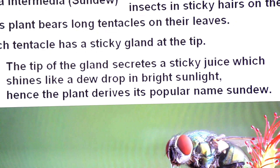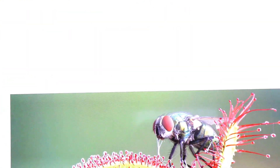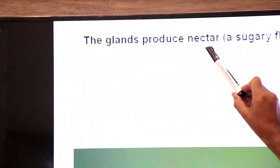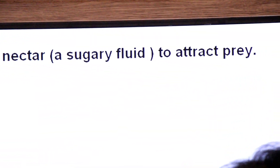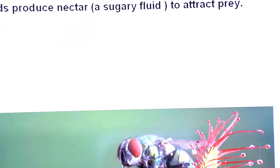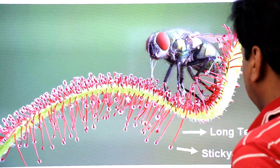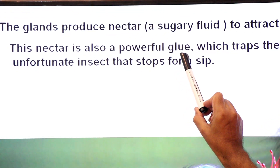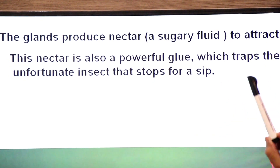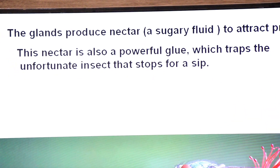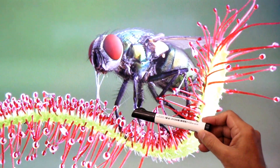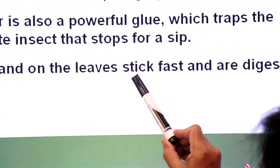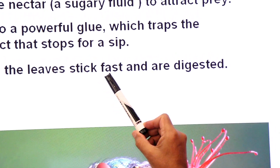The long tentacles produce sticky glands with a sticky juice. These glands also produce nectar — a sugary fluid to attract prey. When insects arrive and place their legs on the leaf, they get trapped. This nectar is also a powerful glue, trapping the unlucky insect that stops for a sip. Insects that land on the leaves stick fast and are digested.